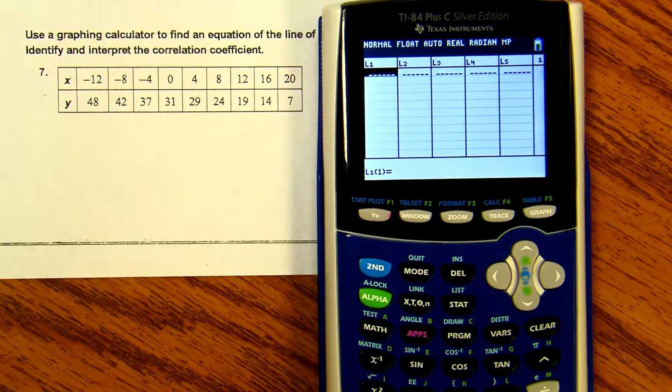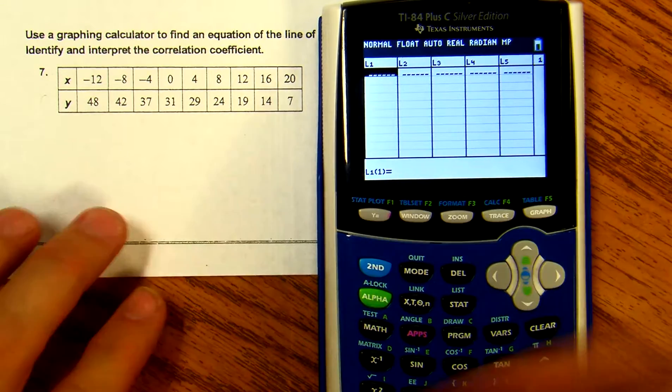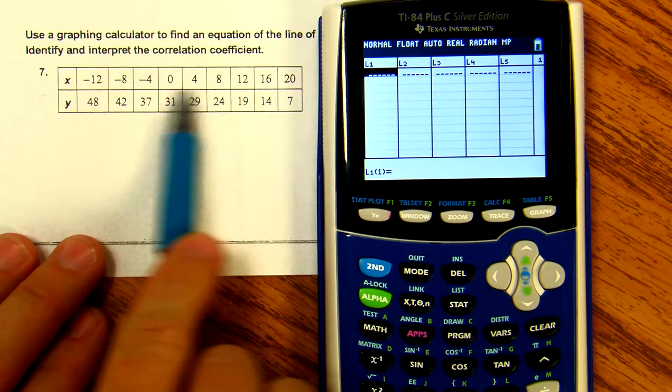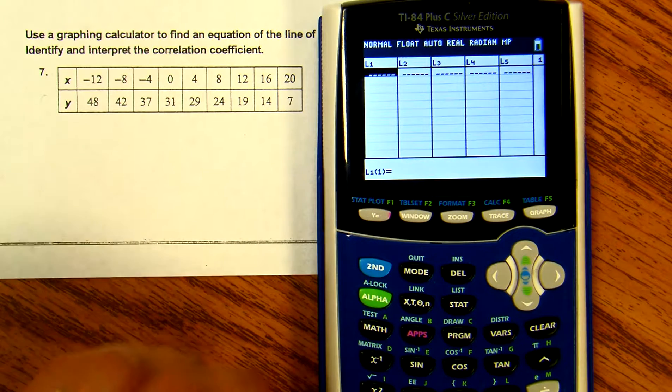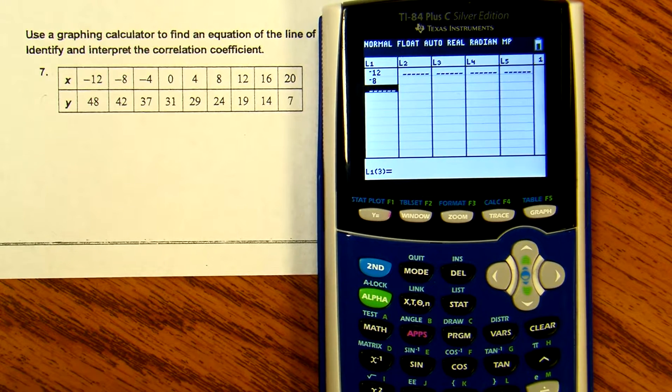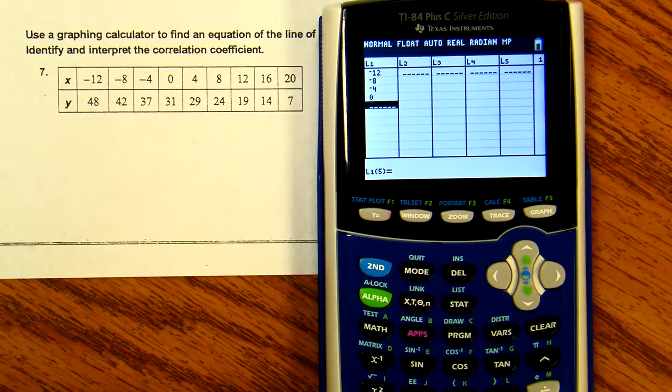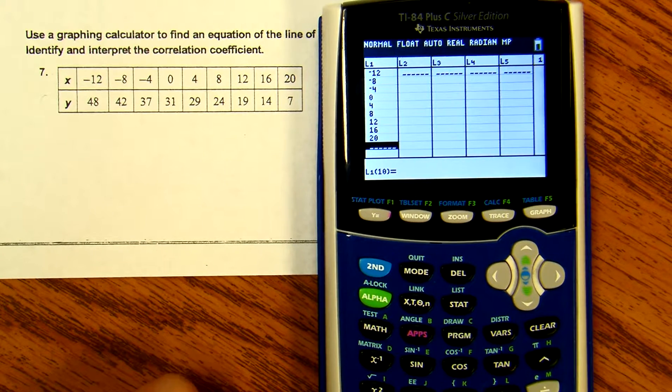We're going to enter all of our values for X into L1 or List 1, and all our values for Y into List 2. The first values will be -12, -8, -4, 0, 4, 8, 12, 16, and 20.